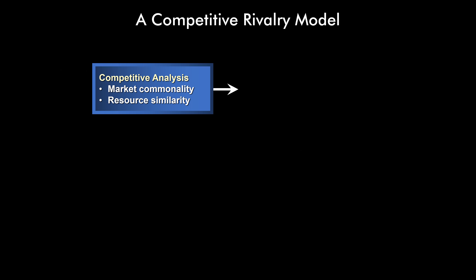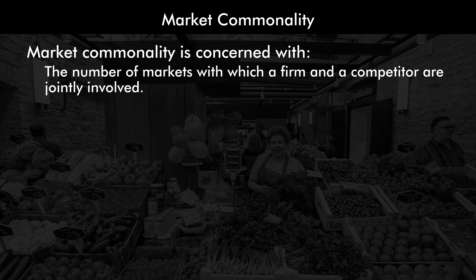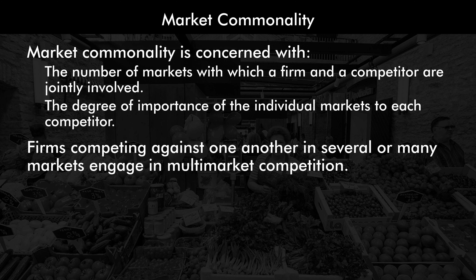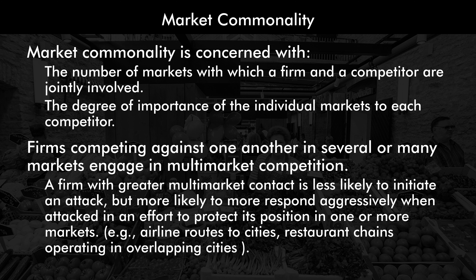Now let's build a competitive rivalry model. First up, competitive analysis. Market commonality is concerned with the number of markets with which a firm and a competitor are jointly involved and the degree of importance of the individual markets to each competitor. Firms competing against one another in several or many markets engage in multi-market competition. A firm with greater multi-market contact is less likely to initiate an attack but more likely to respond aggressively when attacked in an effort to protect its position. For instance, you can see this in airline routes to various cities — if an airline expands to a new city, that would be an attack on the existing airlines there. Similarly, restaurant chains operating in overlapping cities would have multi-market contact.